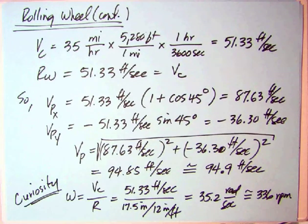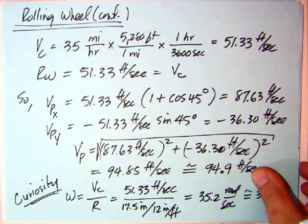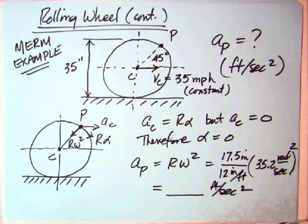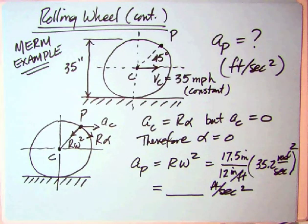When you multiply this out, you get close to 1,807 feet per second squared. Very, very big number. Well, if you divide that by 32.2, you get about 56 Gs. So riding on the rim of a 35-inch wheel at 35 miles an hour, there's a lot of Gs going on.